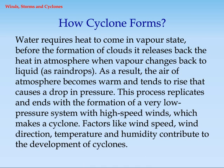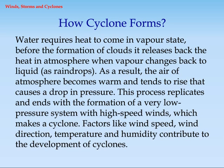A cycle of cyclone forms. Water requires heat to come into vapor state. Before the formation of clouds, it releases back the heat into the atmosphere when vapor changes back to liquid as rain drops. As a result, the air of the atmosphere becomes warm and tends to rise, causing a drop in pressure. This process replicates and ends with the formation of a very low-pressure system with high-speed winds, which makes a cyclone. Factors like wind speed, wind direction, temperature, and humidity contribute to the development of cyclones.